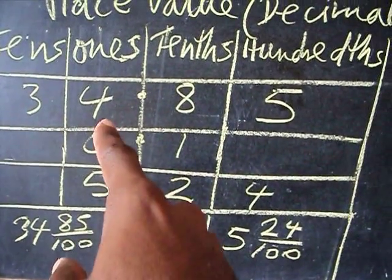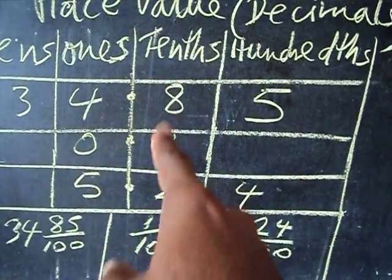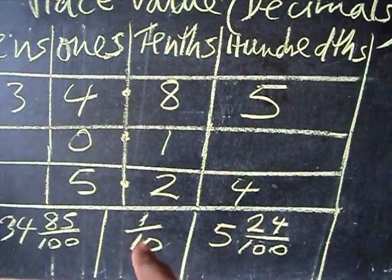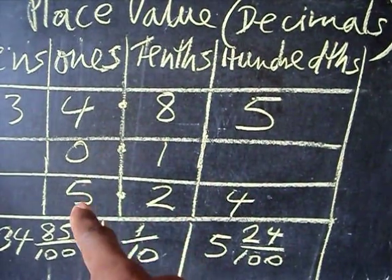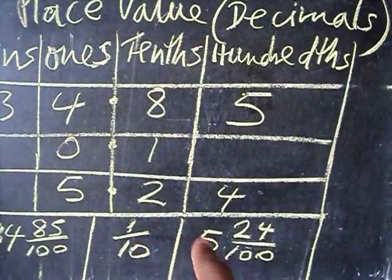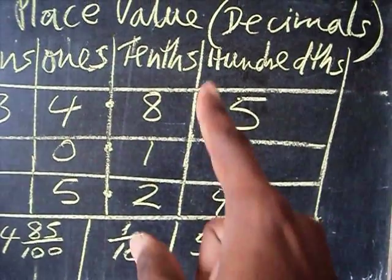The second one has 0.1 - this is the tenths column, so it's 1 over 10. And 5.24 is actually 5 and 24 over 100.